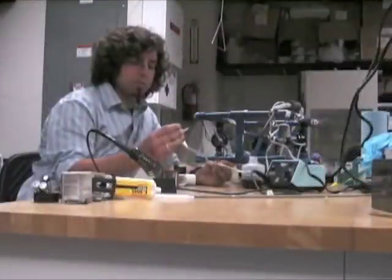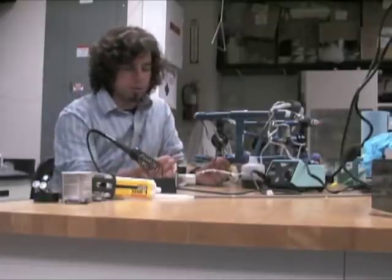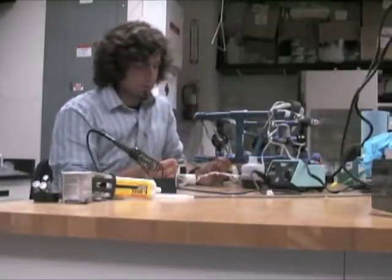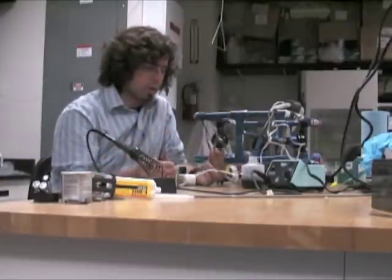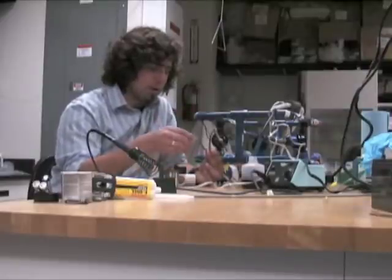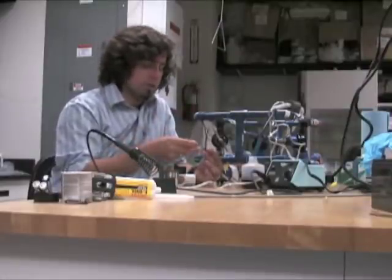All right, so now we're going to solder the connections for the bilge pumps to the tether. For each one you should have a set of wires - one going through the tether and one coming off your bilge pump. The first thing you need to do is cut